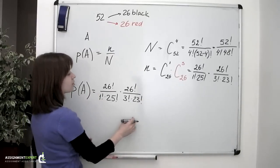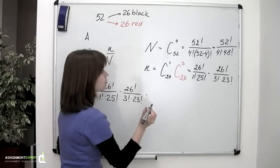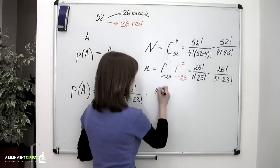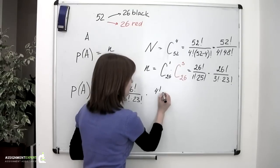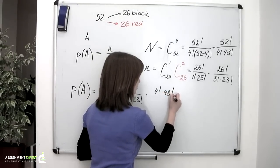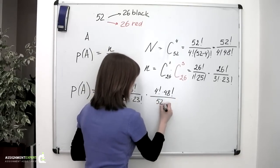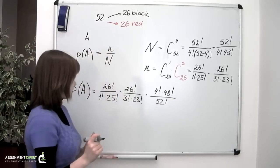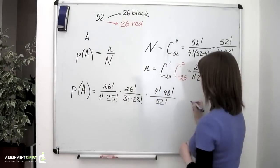And this whole thing goes divided by the capital N, or we can multiply it by 1 divided by N. So we'll have 4 factorial times 48 factorial divided by 52 factorial. Now let's see if we can simplify a little bit this expression.